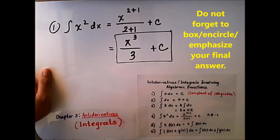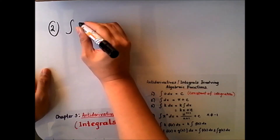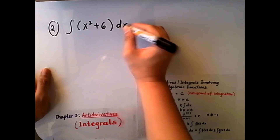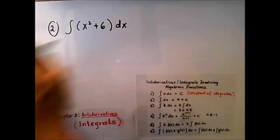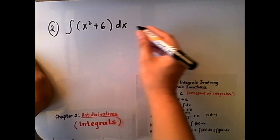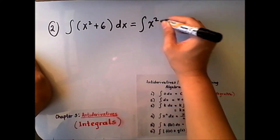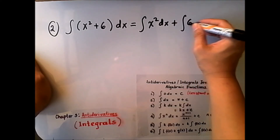Let's have the second example. Here we have the integral of x squared plus 6 dx. There is a binomial here. According to the rules on anti-derivatives and integrals involving algebraic expressions, we can split this into two: the integral of x squared dx, plus the integral of 6 dx.